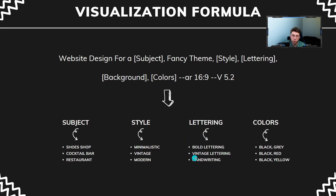Vintage lettering is great for shoe shops or similar businesses. Next we have the background — insert something relevant to your shop. For example, if you have a cocktail bar, type 'cocktail in the background'; for a shoes shop, type 'shoes in the background'. Then we have colors — popular themes include black-gray, black-red, or black-yellow. Finally, set the aspect ratio (16:9 or other), and importantly, use Midjourney version 5.2 rather than version 6, because version 5.2 works better for visualizations.